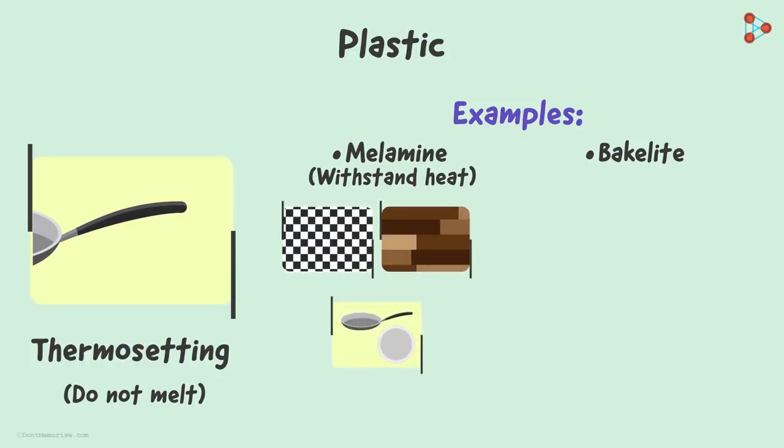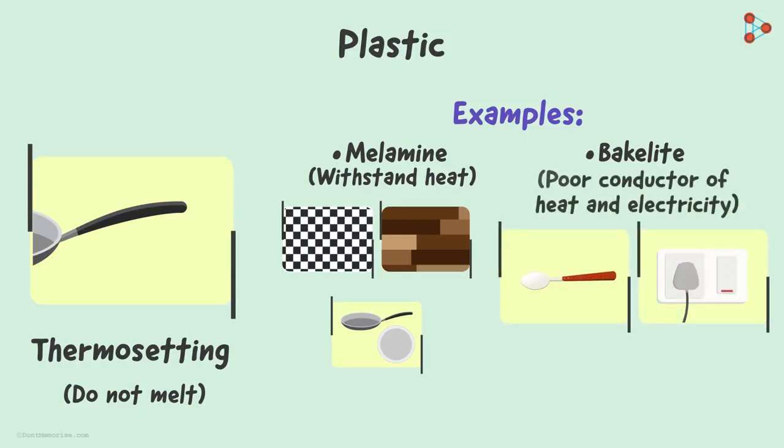Bakelite, on the other hand, is used in making handles of kitchen utensils and switches as it's a poor conductor of heat and electricity. So this was about thermosetting plastics.